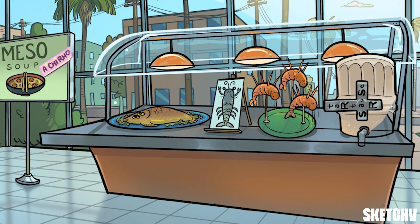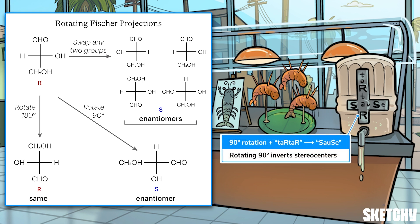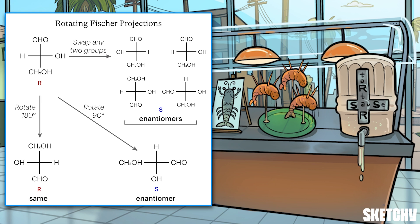Let's look at this vat of tartar sauce. If you rotate a Fischer projection by 90 degrees, or if you swap any two groups in the projection, you'll invert the chirality at all the stereocenters — creating the enantiomer. If you turn the tartar sauce dispenser handle 90 degrees, two S's become two R's, just like in a 90-degree Fischer projection rotation. If you rotate the Fischer projection by a full 180 degrees, that's equivalent to two 90-degree rotations — an R-to-S swap followed by an S-back-to-R swap — so a 180-degree rotation regenerates the same molecule you started with.